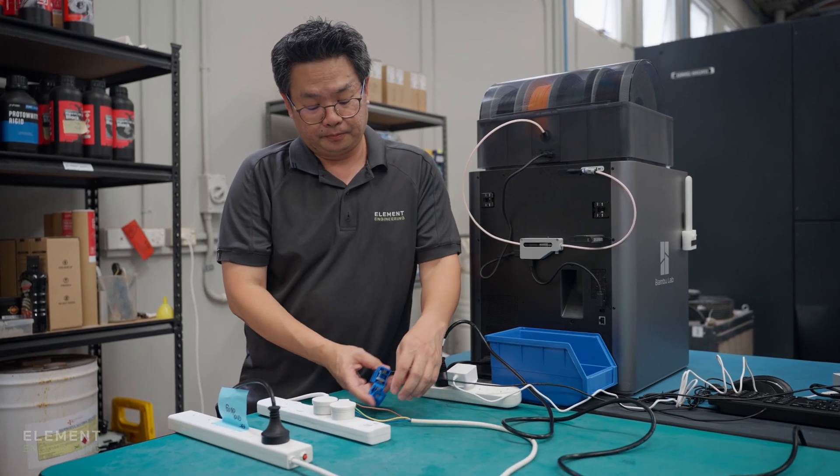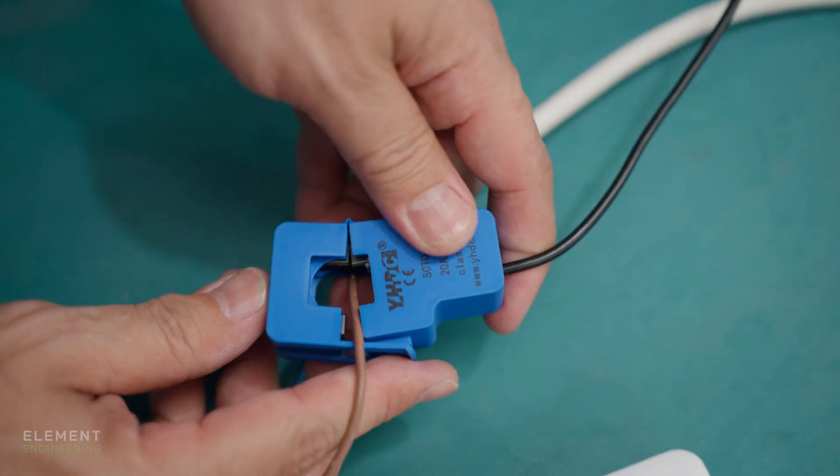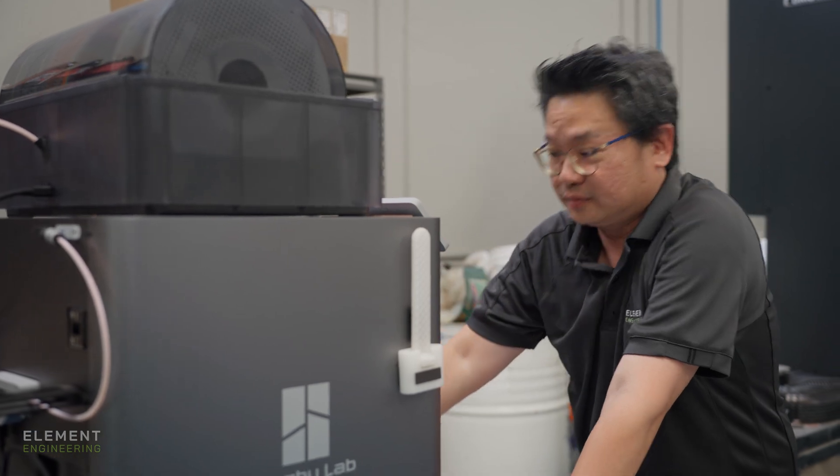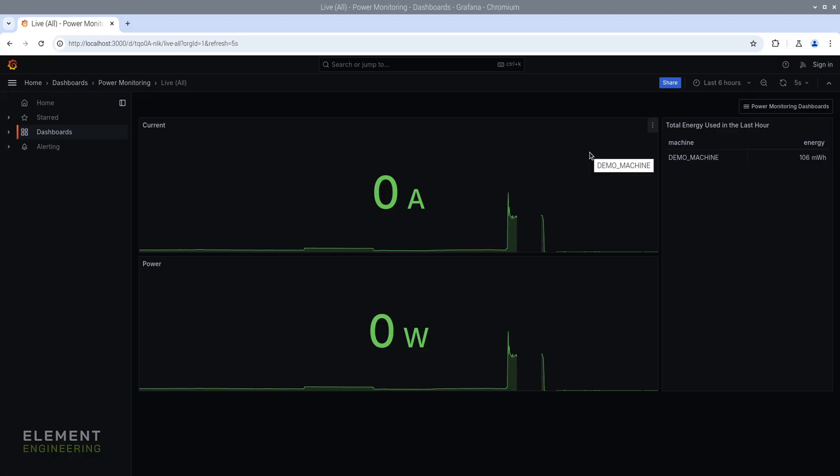And then just that one clamp we have to put around the live phase on the power that's coming into the 3D printer and then that's it. All we have to do next is start up the printer and we can see that live data.